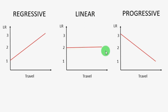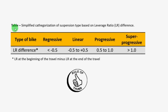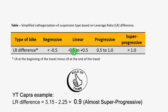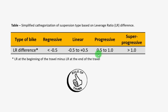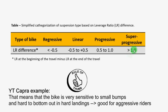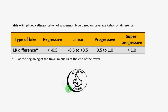The linear bike maintains a constant leverage ratio, so the behavior of the rear suspension is the same at the beginning and at the end of the travel. Here I've created a table with a simplified categorization of suspension types based on leverage ratio differences. You take the leverage ratio at the beginning of the travel and subtract the leverage ratio at the end. If the value is smaller than negative 0.5, this is a regressive bike. If the values are between negative 0.5 and positive 0.5, the bike is linear. If the value is bigger than 0.5, it's a progressive bike, and if bigger than 1, it's a super progressive bike. This is a simplified rule of thumb.